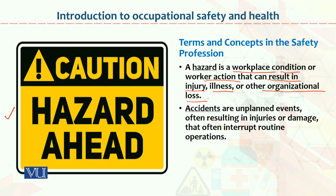Accidents are unplanned events — unplanned ka yeh matlab hai ke yeh events hamare ikhtiyar mein nahi, yeh kisi waqt bhi ho sakta hai — often resulting in injuries or damage that interrupt routine operations. Ise accidents kehte hain. If any situation happens in an unplanned way and that was not according to your expectation, that may be treated as an accident.